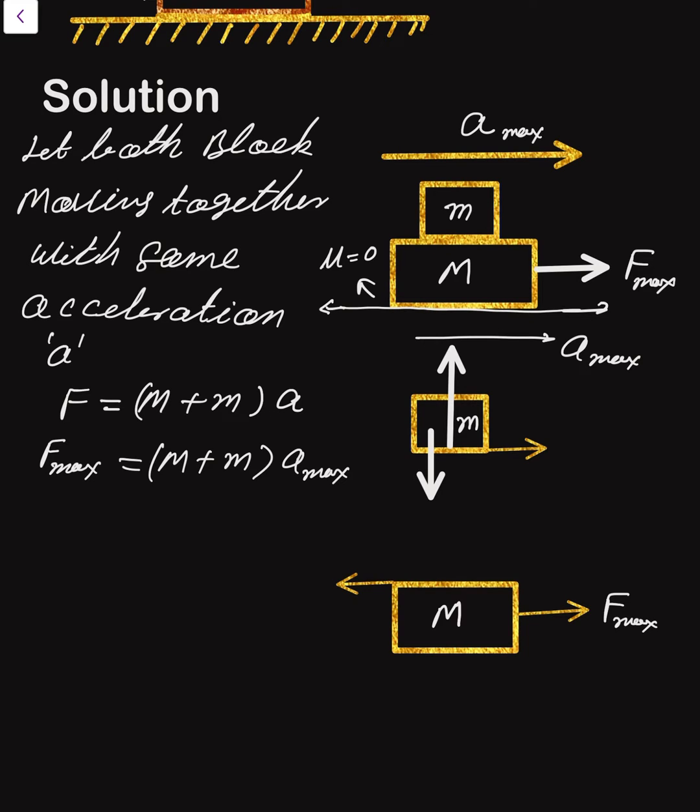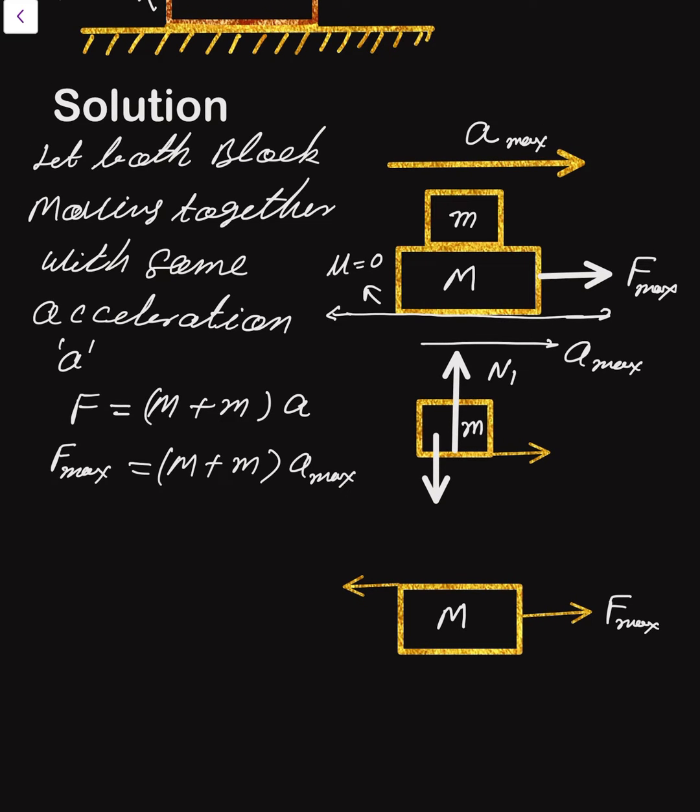Now our motive is to determine a max. The small m block is also moving with a max. If you make a free body diagram of that block: here N1, here m into g. If a force is applied here, but this block is moving a max because of the in-between frictional force.